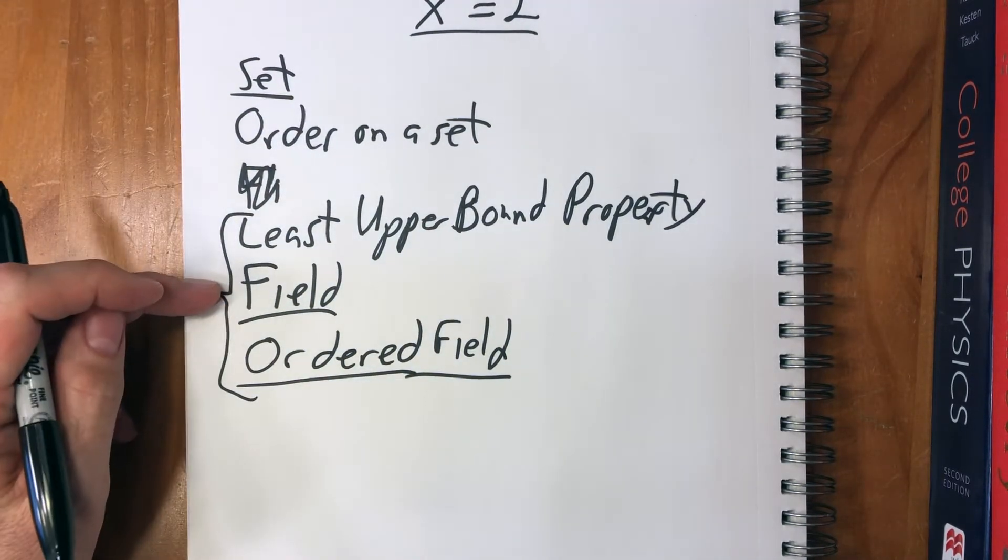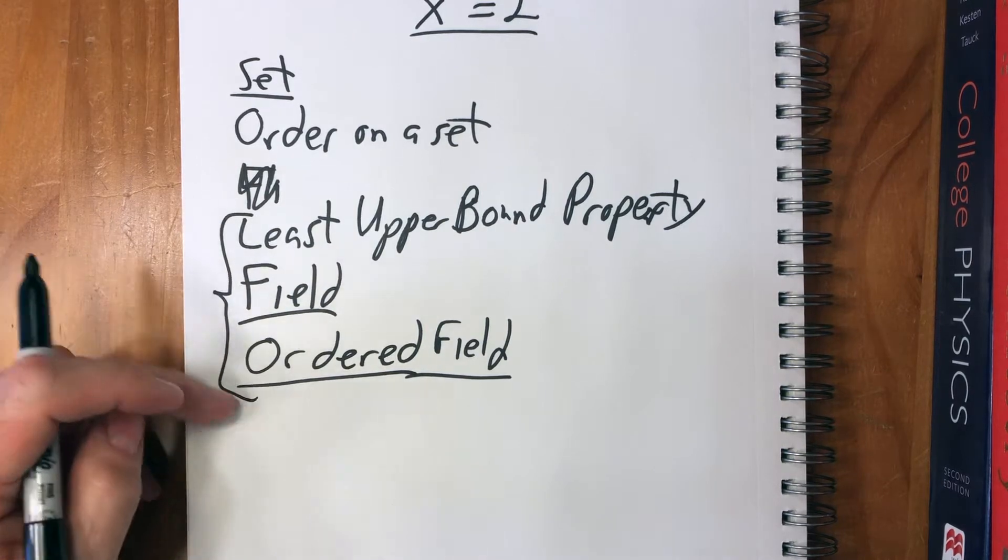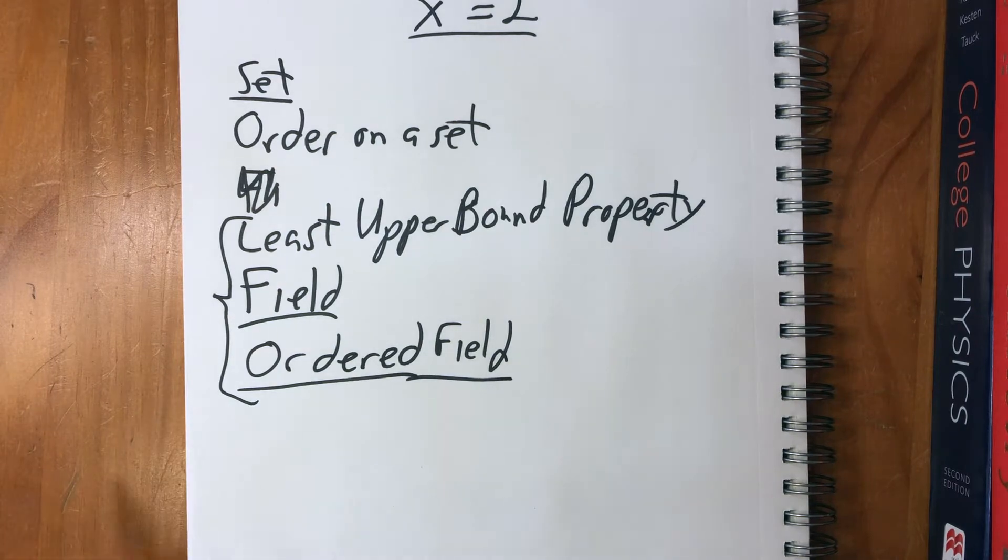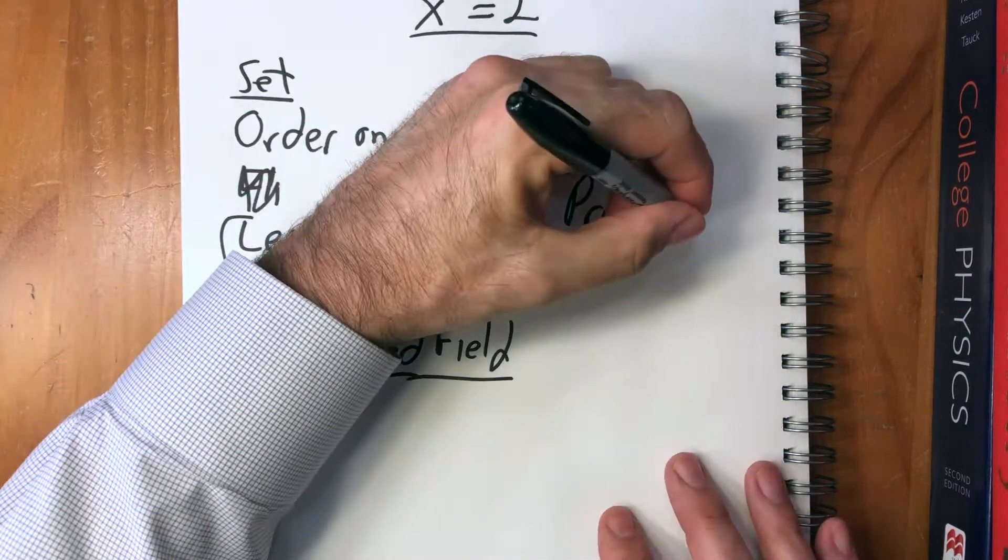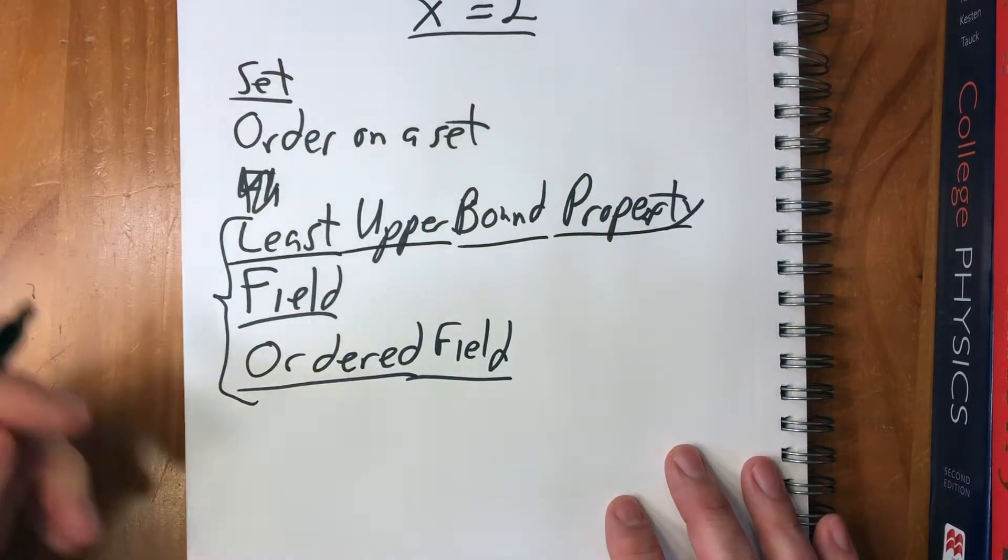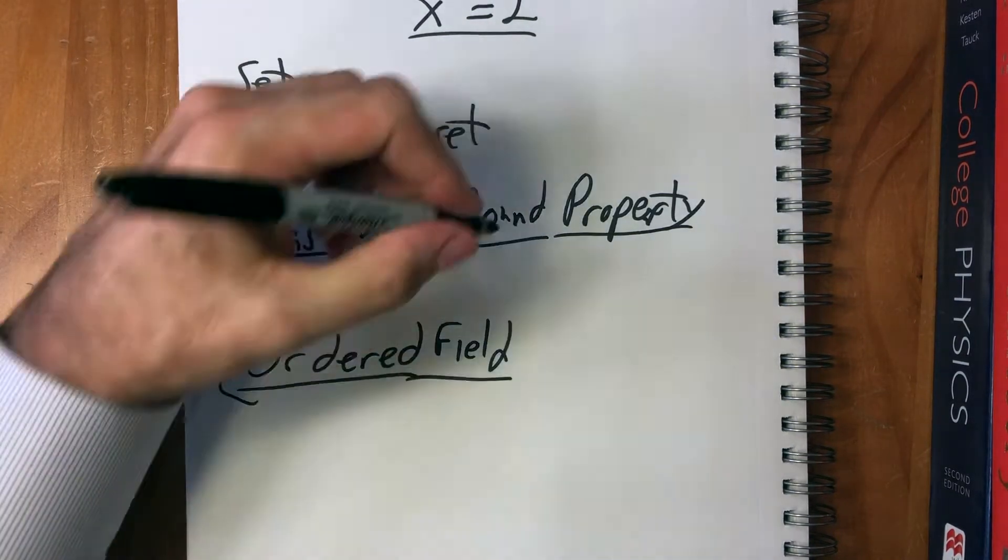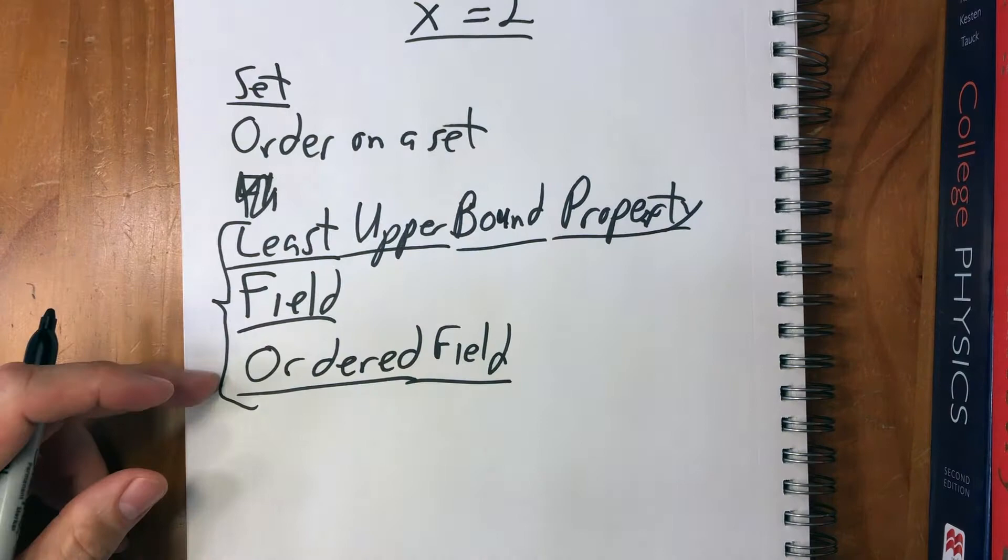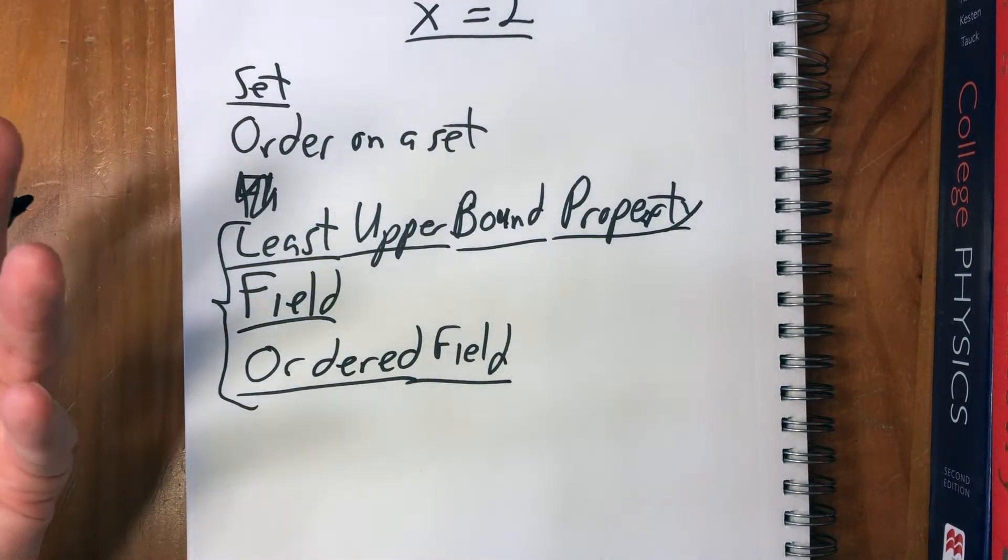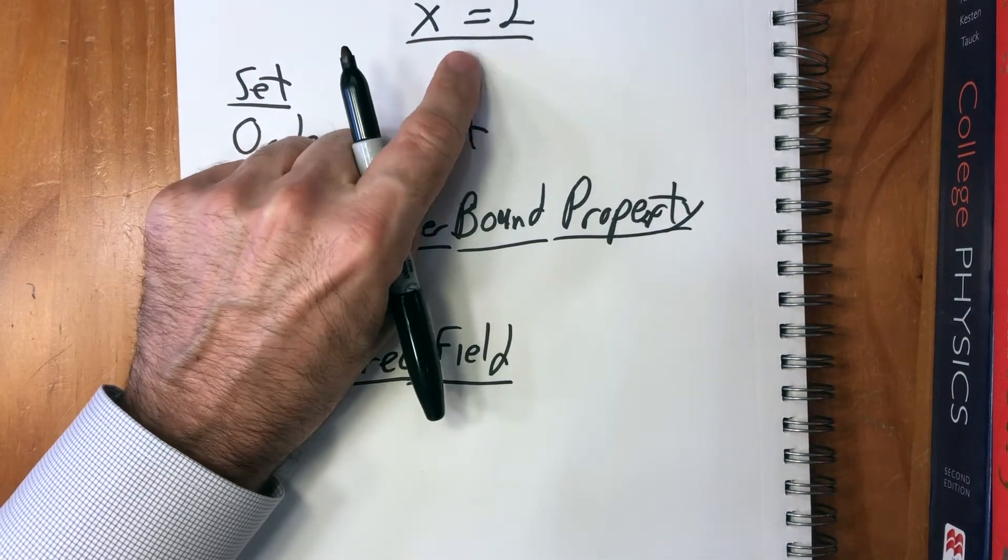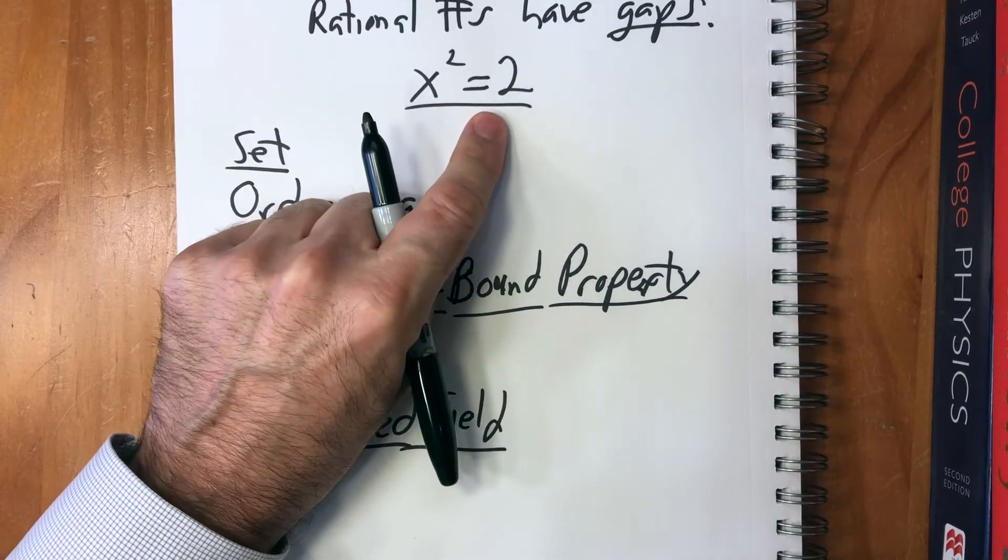So rational numbers are already an ordered field. Every number has an inverse, there's an identity, multiplication, addition, and so on. The problem with rational numbers is they don't have a least upper bound property. So by adding the least upper bound property to the rational numbers, we will create a new set that will have a solution to x squared equals two.